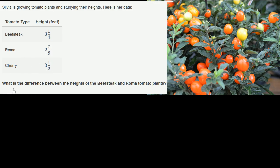And they ask us, what is the difference between the heights of the beefsteak, so that's that one right over there, and the roma tomato plants? So they want us to find the distance between these two heights. This cherry-tomato height was really unnecessary for the sake of this problem.